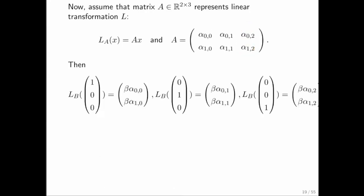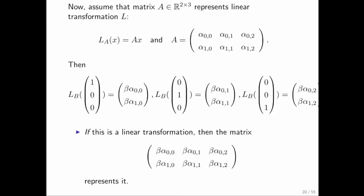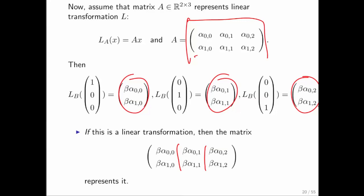So if we know matrix A, we know how to compute the columns of matrix B, which may represent L sub B. The first column is beta times the first column of A, the second is beta times the second column, and the third is beta times the third column. Notice that this simply means we multiply every element of matrix A by beta.